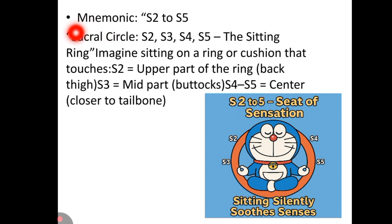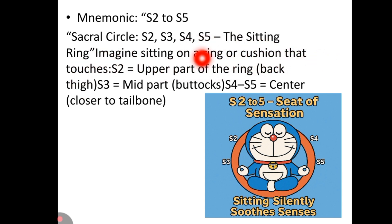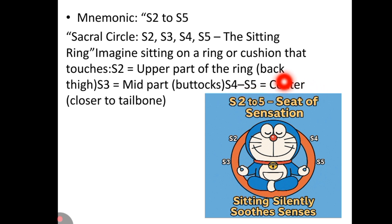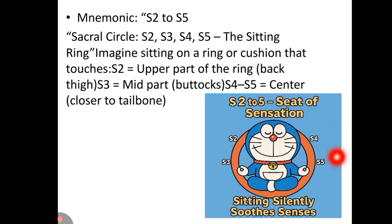To remember S2 to S5, use the sacral circle mnemonic: S2, S3, S4, S5 — center, closer to the tailbone. 'Seat of sensation: sitting silently soothes senses.' S2 to S5.